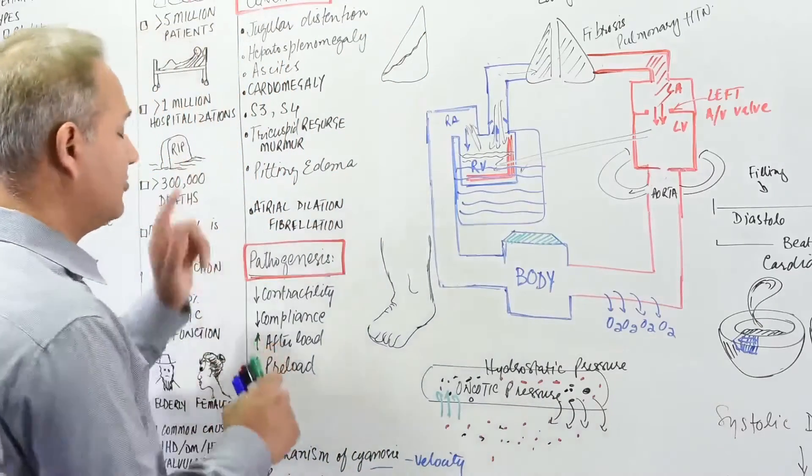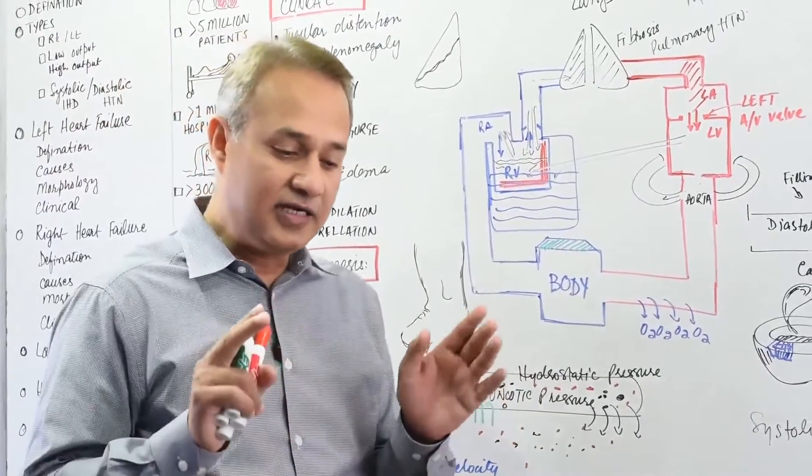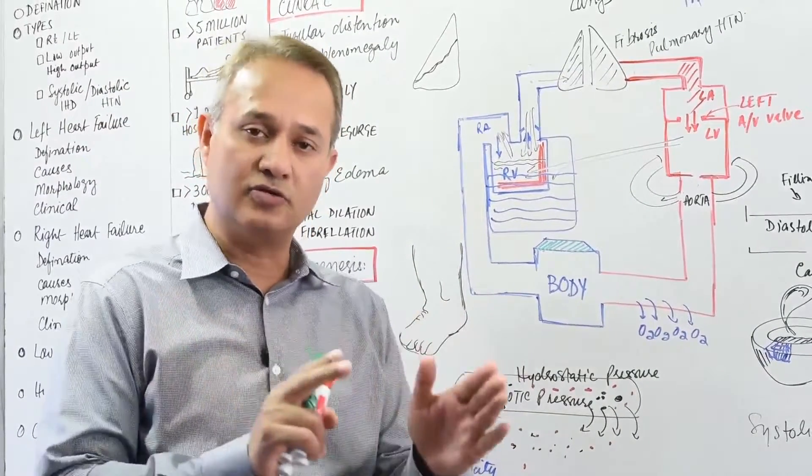One more thing here on the right side - cyanosis occurs both for the left and right. Right heart failure usually causes more cyanosis compared to the left.